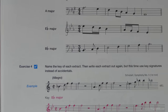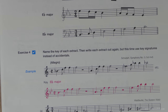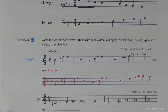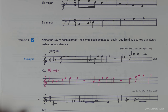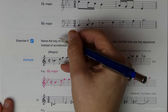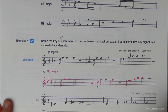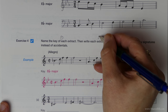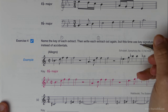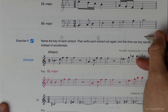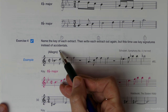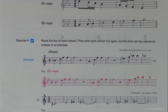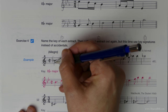Now we have the same information again but in yet another guise - exercise 4. We've got to do a little bit of detective work: first, name the key of each extract, and then write it out again but this time with a key signature instead of the accidentals. So first of all, how do we find the key? We've got to look for clues.